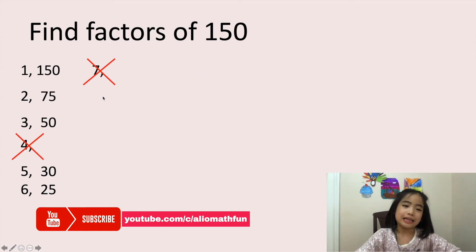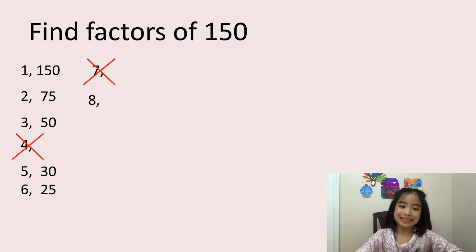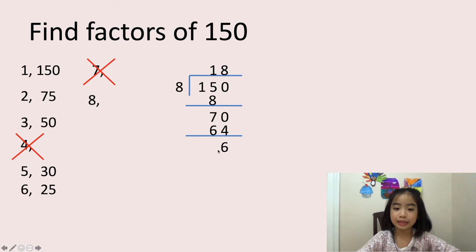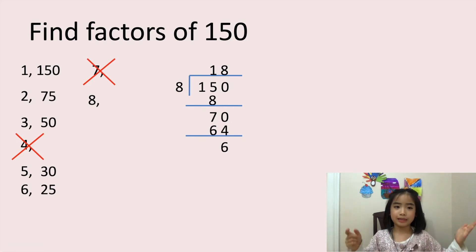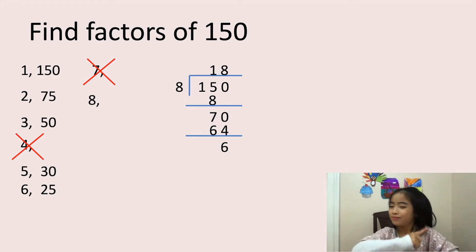Now, is 8 a factor of 150? Well, let's take a look. 150 divided by 8 equals 18 with a remainder of 6. We want no remainder, so 8 is not a factor of 150. Let's cross this one out too.